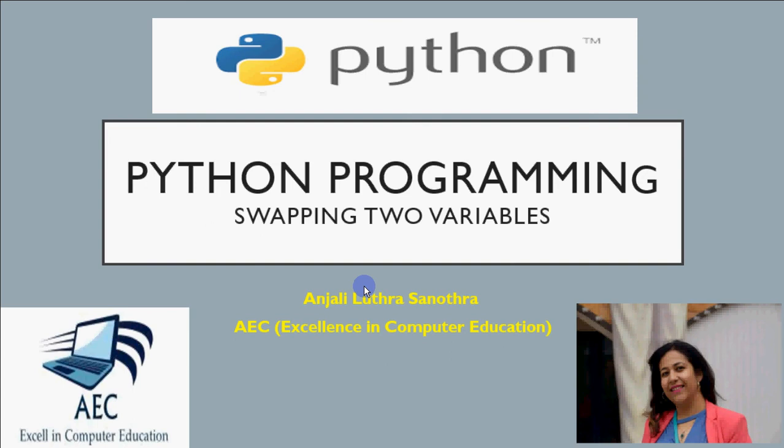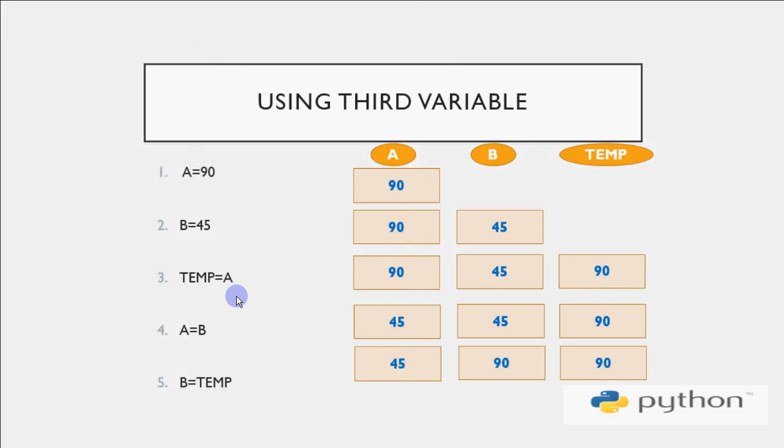So swapping basically means that you have to change the values of two variables with each other. That is, if I have two variables named A and B, the value of A should go to B and value of B should go to A. Let's see how we do that in Python. So there are two ways of doing that.